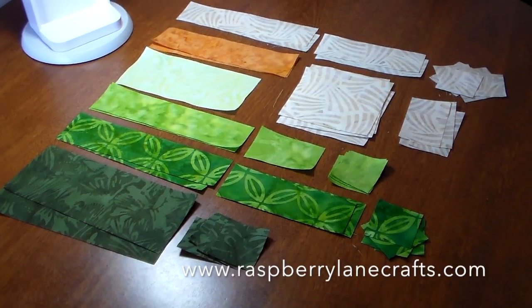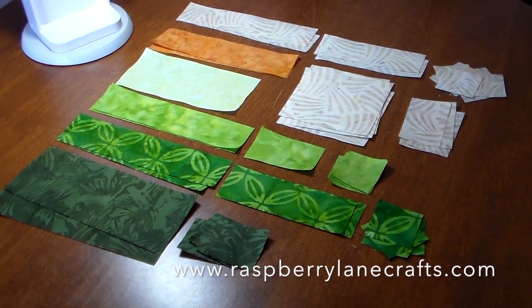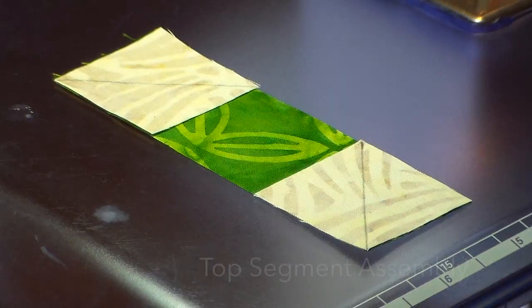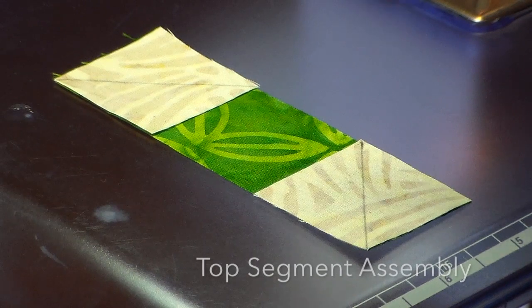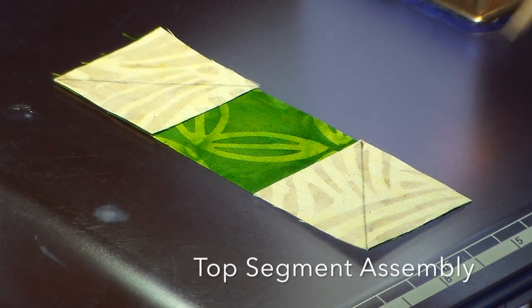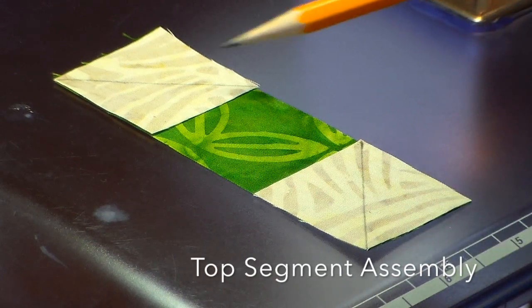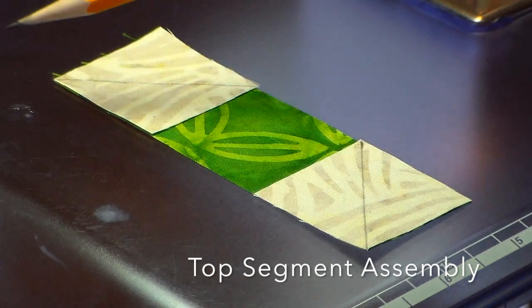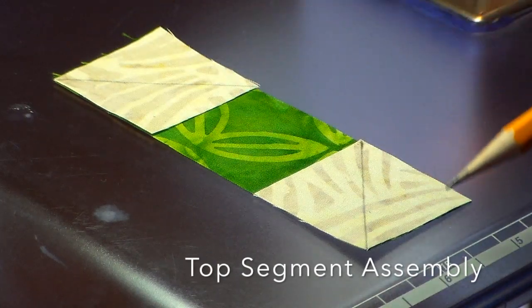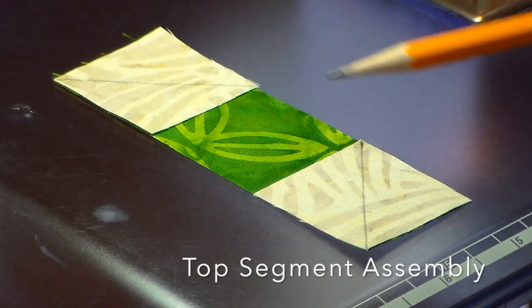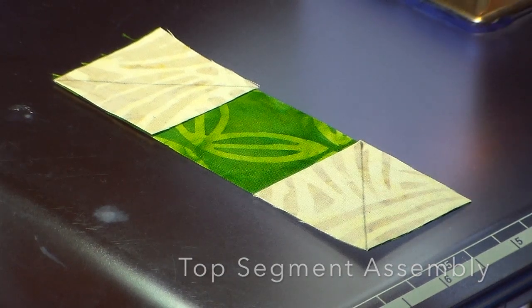These are all the pattern pieces. This is the top section of the Chinese Lantern Fortune. I've drawn the two diagonal lines on my 1 1⁄2 inch squares on the 4 1⁄2 inch by 1 1⁄2 inch strip and I'm going to sew along those lines.